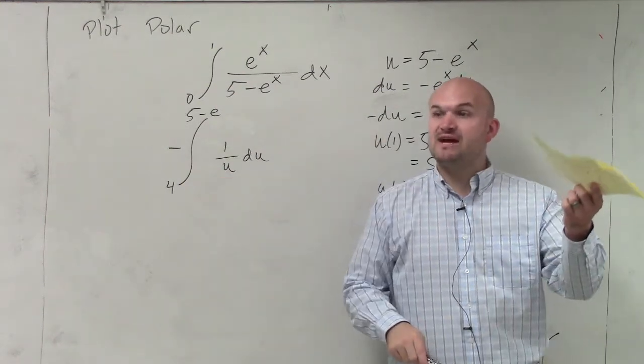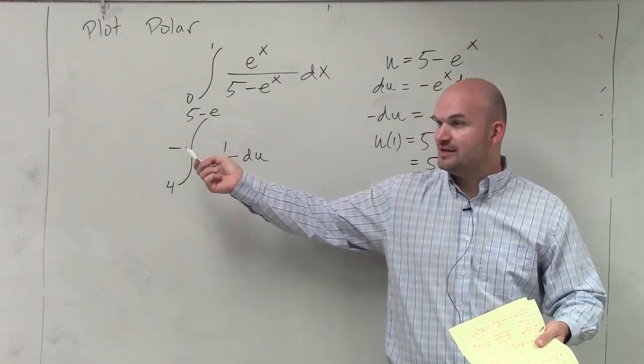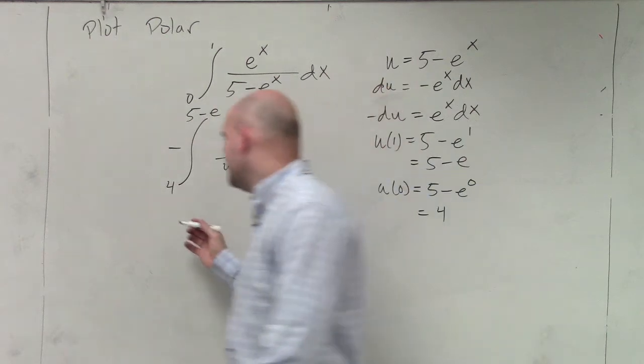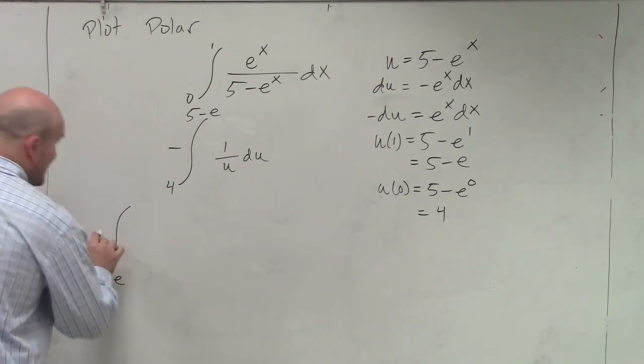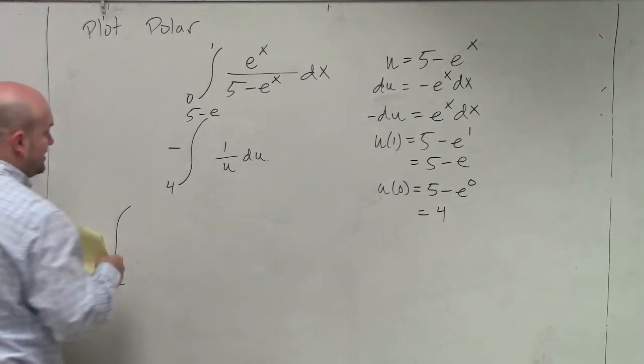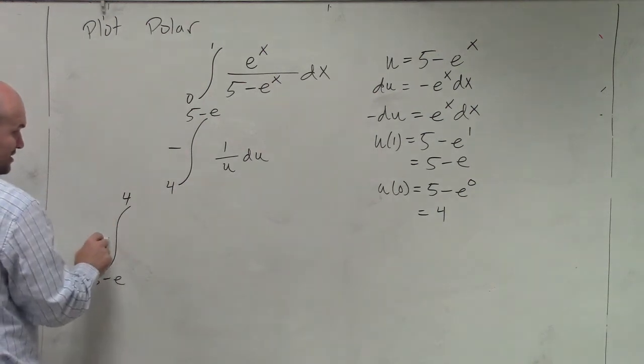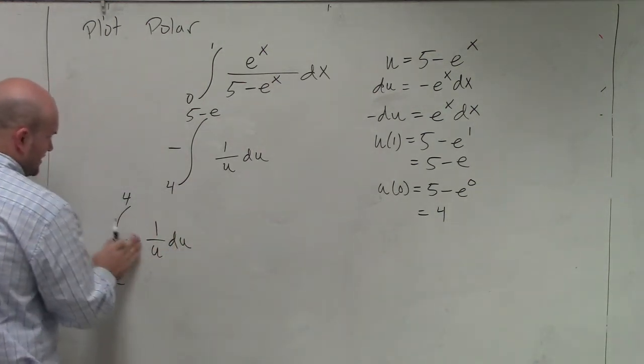So therefore, if we're going to flip it, we have to negate it, right? But it already is being negated. So therefore, now it's going to be positive. So it should look like this: 5 minus e. Now it's positive. It's no longer negative. It turned to positive. 1 over u du. There's no equal sign there.